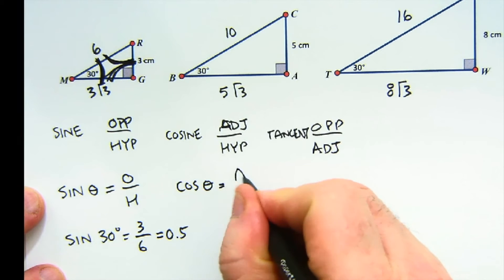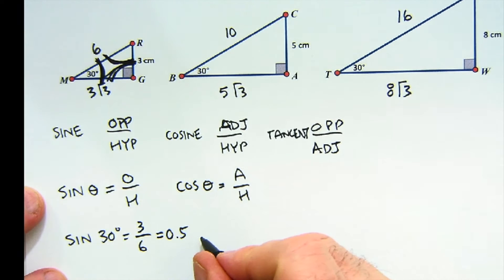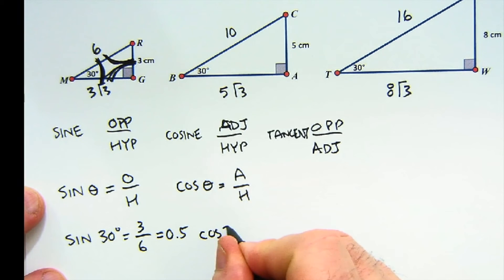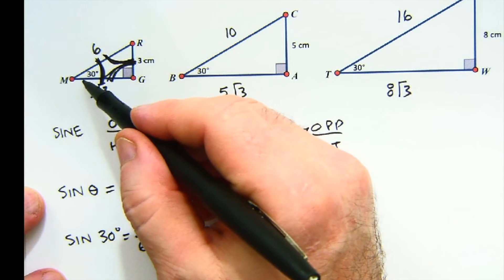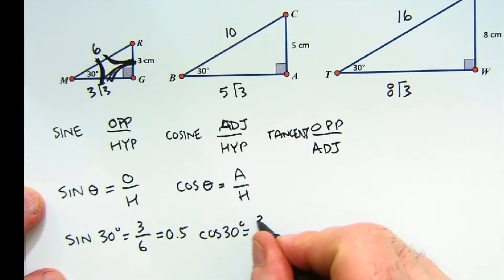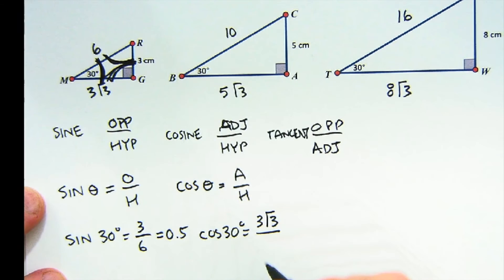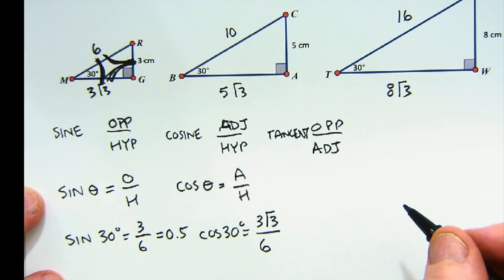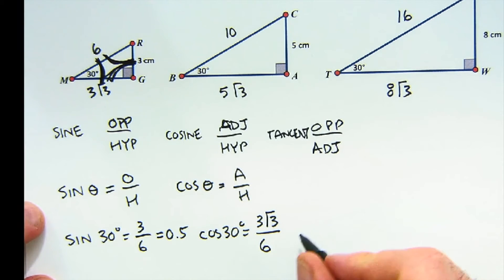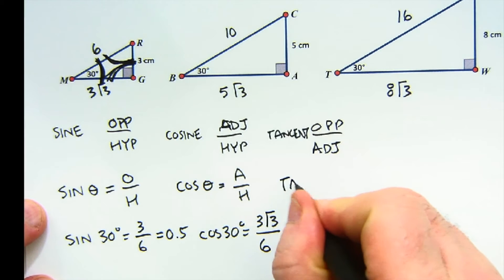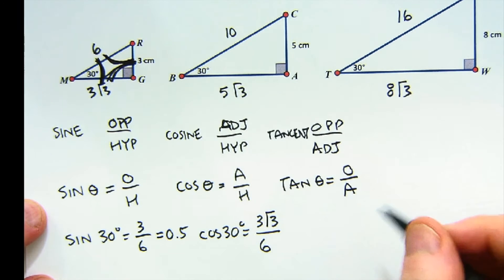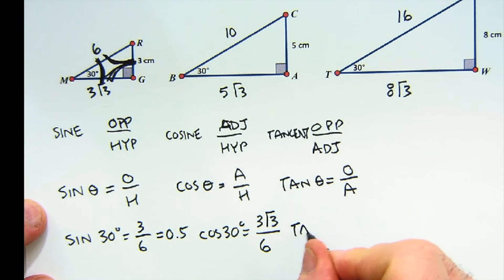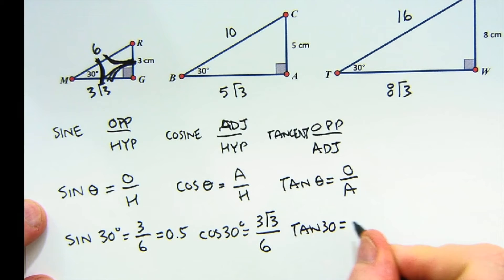The cosine — sometimes written as just cos — represents the adjacent to the hypotenuse ratio. So if we do the cosine of that same 30-degree angle, cosine would be the adjacent, which would be 3 root 3, over 6. Finally, the tangent ratio, written as tan of an angle, is its opposite to its adjacent. In this case, the tangent of 30 would be 3 over 3 root 3.